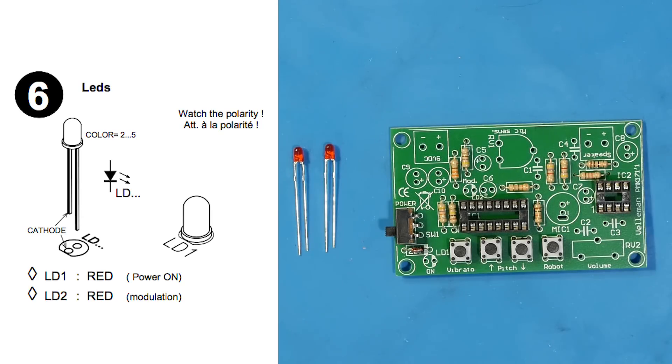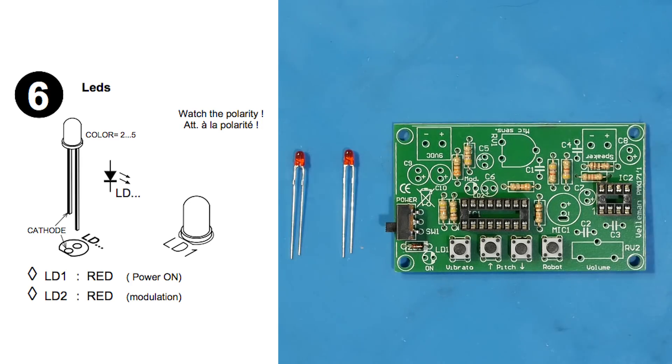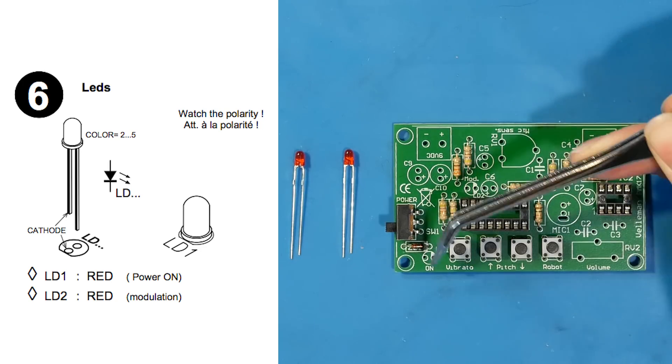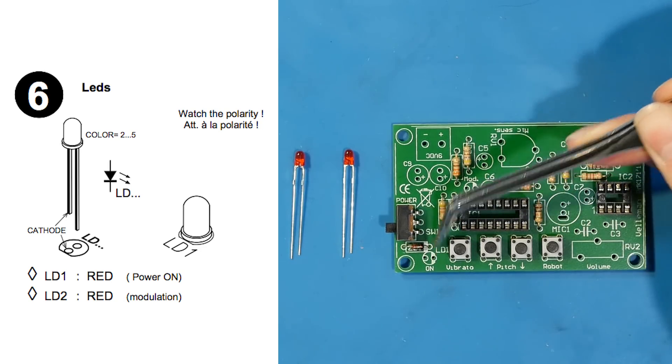In step six, we add our LEDs. Notice the diode symbol with two arrows pointing away diagonally. Now, that's the LED symbol. Now, these two tiny LEDs will be used as indicator lights for both power and modulation. Matching with the instructions, you want to find LD1 and LD2 on the PCB. You also want to make sure that when you place your LEDs, you're placing the shorter cathode lead in the hole with the line on it.